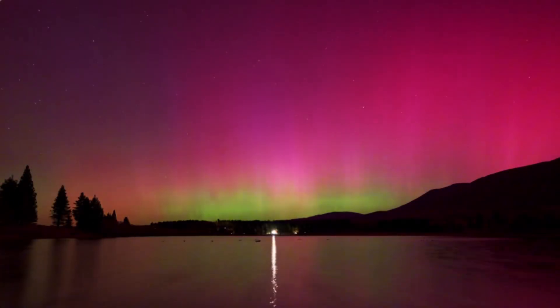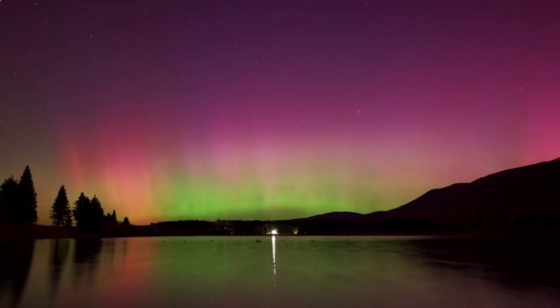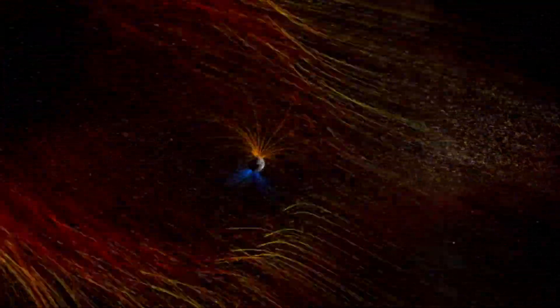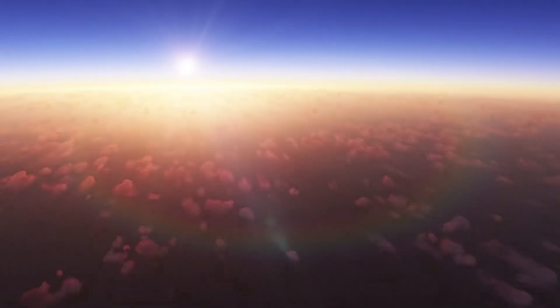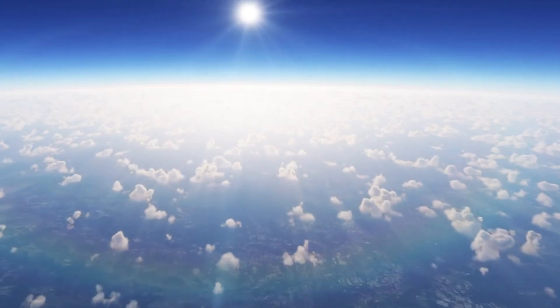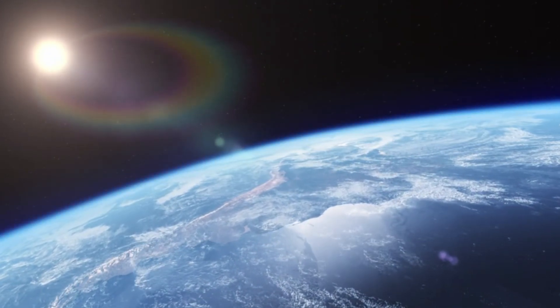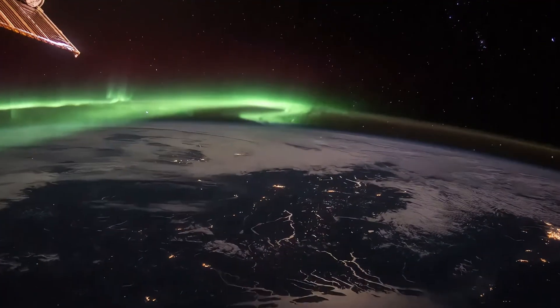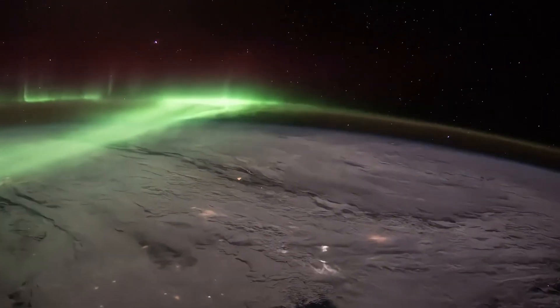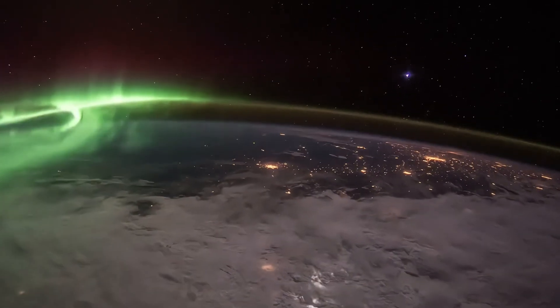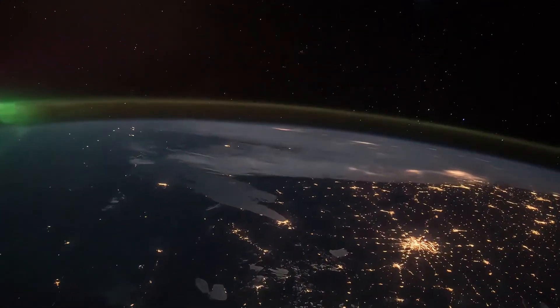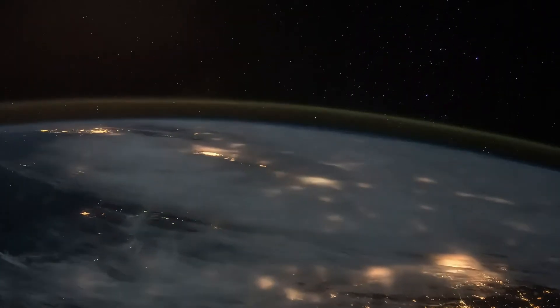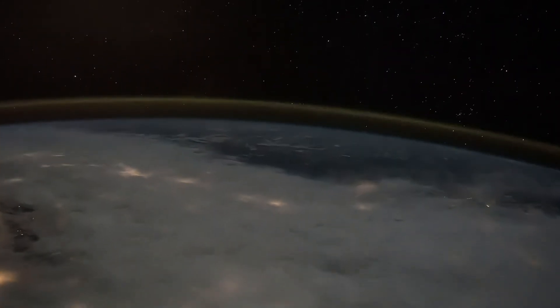Ever wonder why the northern lights come in different colors? It all comes down to chemistry in the sky. When solar particles hit our atmosphere, they excite different atoms, and each one lights up in its own signature color. Green is the most common. That's oxygen doing its thing at lower altitudes. Red? That's oxygen, too, but way higher up. And those rare blues and purples? That's nitrogen joining the party. But the aurora isn't just eye candy. It's data. The brightness, the colors, even how far they stretch across the sky, can tell scientists a lot about the solar wind. How fast it's moving, how dense it is. So next time you see the sky glowing, remember, it's not just a light show. It's the sun sending us a message.